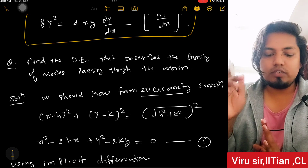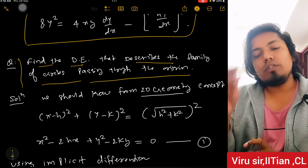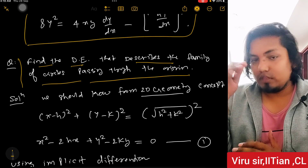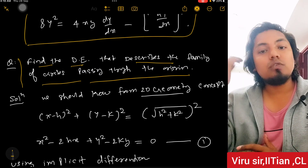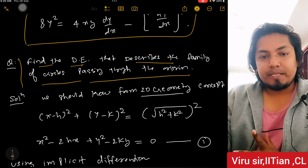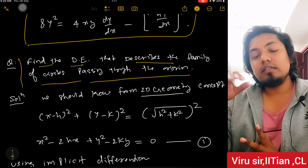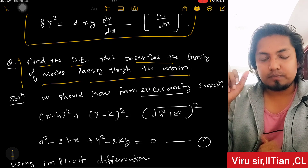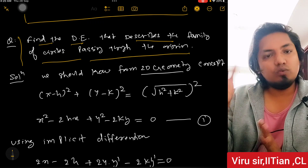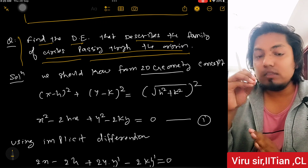Another important type: find the differential equation describing the family of circles passing through the origin. Many students won't remember this from their 12th class work on family of curves — parabolas, ellipses, circles with h-k format. The equation of a circle passing through the origin involves the general circle equation with center (h, k) and radius √(h² + k²).